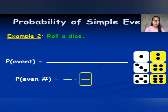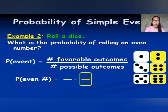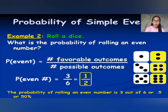Still on rolling a die: what is the probability of rolling an even number? We need the number of favorable outcomes divided by the number of possible outcomes. The event is rolling an even number. There are 3 even numbers among the outcomes, and 6 possible outcomes. Reducing 3 over 6 to its lowest term gives 1/2. So the probability of rolling an even number is 3 out of 6, or 0.5, or 50%.